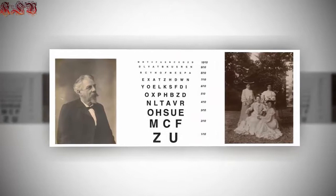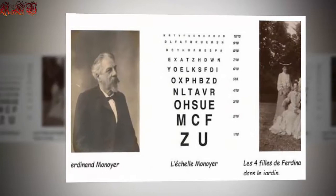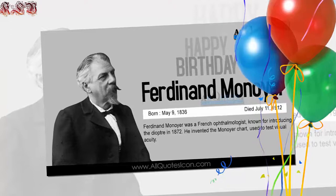The Monoyer chart has largely been replaced by the Snellen chart, which was invented soon after and places the largest letters at the top. Around three quarters of Britain's population wear glasses or contact lenses or have had laser eye surgery, according to the College of Optometrists, with almost 3,000 million people around the world classified as blind or visually impaired.